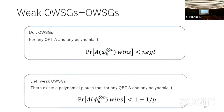Weak one-way state generator is the quantum analog of weak one-way function. In classical case, one-way function and weak one-way function are known to be equivalent. In quantum case, we can define a weak version of one-way state generator: there exists some polynomial P such that for any QPT adversary and any polynomial T, the probability that A wins is bounded by one minus one over P. Our result is they are equivalent, just as in the classical case. This equivalence is useful to show several results in this paper.